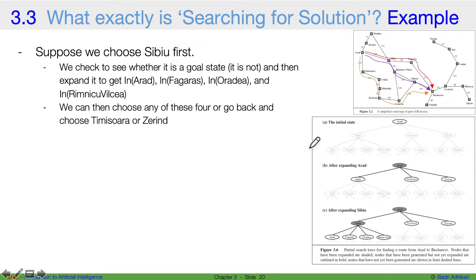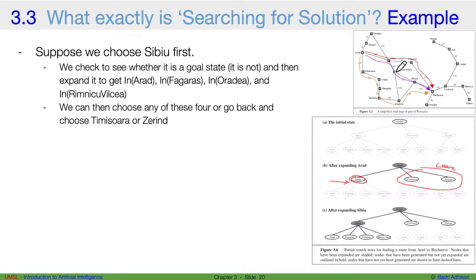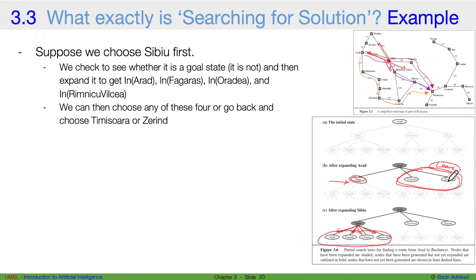Suppose we choose Sibiu first — the agent decides to go to this state and leave the others. Now we check to see if this is a goal state. Is Sibiu our goal state? If it is not, then we expand it to get all other possible neighbors. From Sibiu, we can either go back to Arad, or go to Oradea, Fagaras, or Rimnicu Vilcea. We can then choose any of these four, or go back and choose Timisoara or Zerind, which we had initially left.